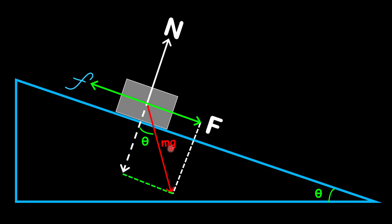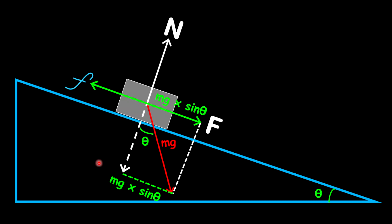The mass times gravity, which is the weight of the object, is acting at this angle — the same as the angle of the incline. Based on triangle trigonometry, the opposite side is given as the hypotenuse times sine theta, because opposite over hypotenuse equals sine of the angle. So that side is mg times sine theta. The adjacent side, which is the perpendicular force, is given as the hypotenuse — mass times gravity — times cos theta, since cos theta equals adjacent over hypotenuse.